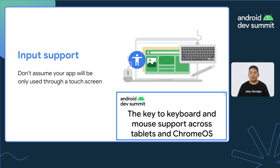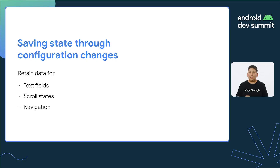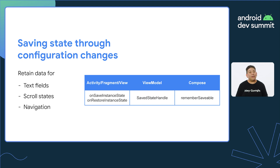We'll explore this briefly later in this talk, but if you want to learn more, I recommend watching Gina and Miguel's talk, 'The key to keyboard and mouse support across tablets and Chrome OS' here at ADS. Since multitasking is much more prevalent on large screen devices, you'll need to make sure that your app state persists when the display of your app changes. This is critically important on foldables, when a user may go from folded to unfolded, or resizing in multi-window on tablets, or free form windows on Chromebooks. The good news is that there are many tools you can use depending on the technology your app is using.